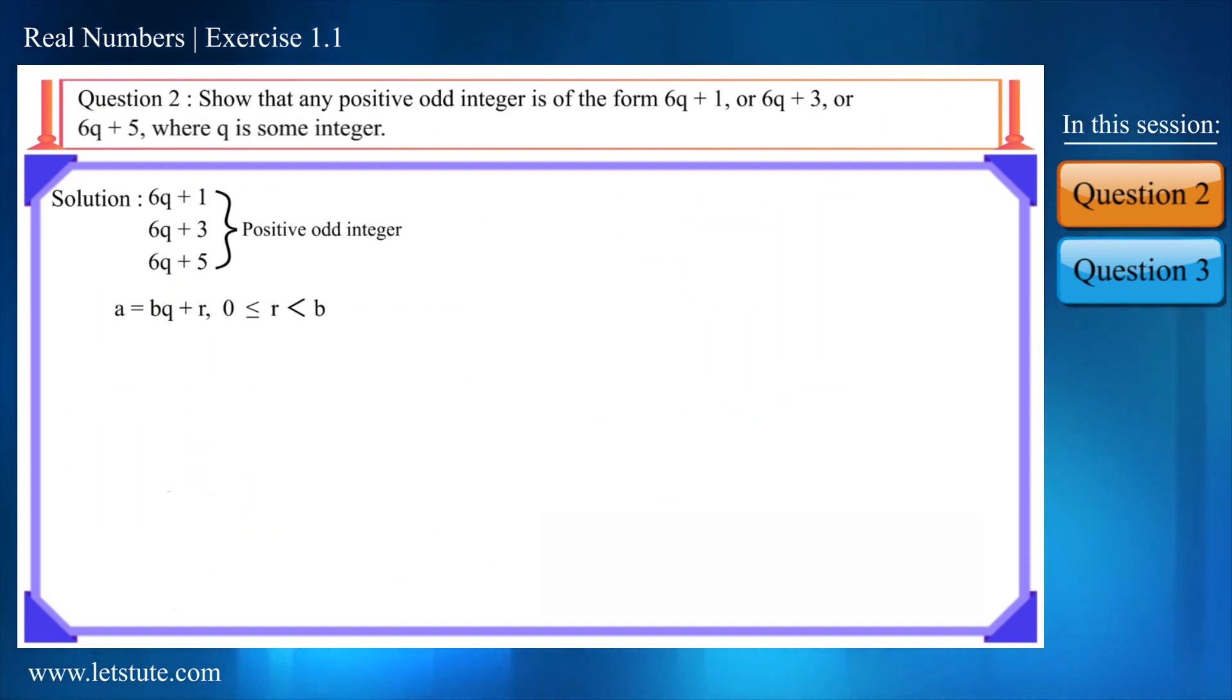So, let's try to solve this. You can see that these numbers are in the form of a equal to bq plus r, here b is 6, q is a multiple and the value of r is changing in each number. We know that r is equal or greater than 0 and always will be smaller than b.